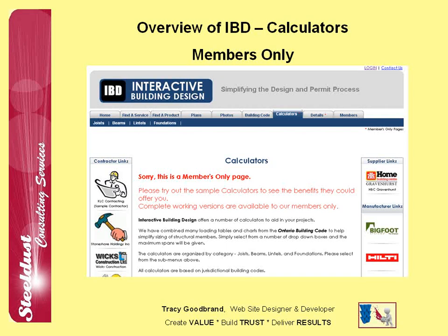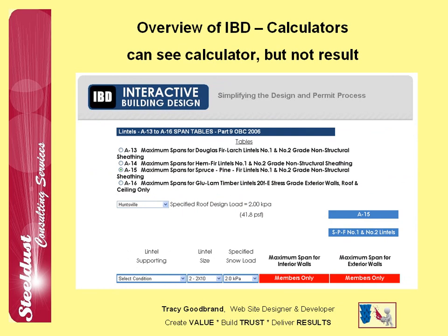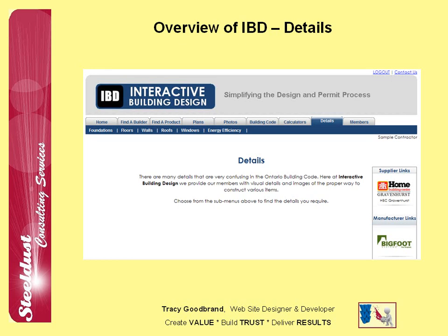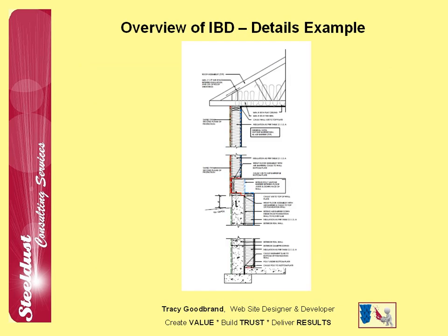I will expand upon the calculator section later, but this is one of the two areas of the website that is strictly for members. A public viewer, or a non-member, can see what the calculator does and how it works, but will not get the final answer. The details section is the second area just for members — an area that depicts detailed building images that have been approved by both engineers and building inspectors, and therefore provide excellent information.